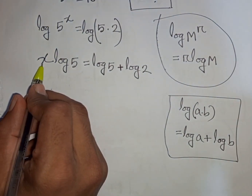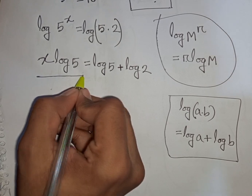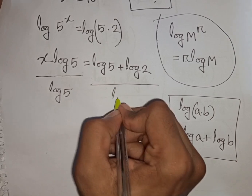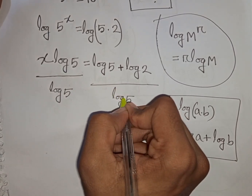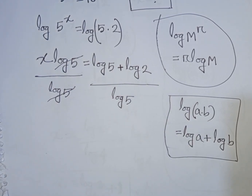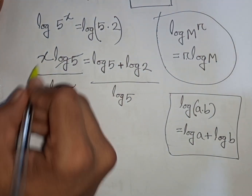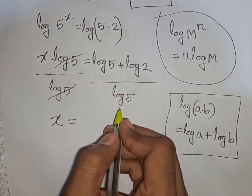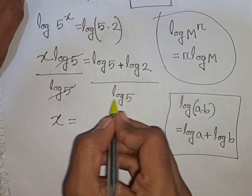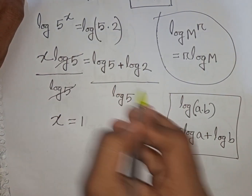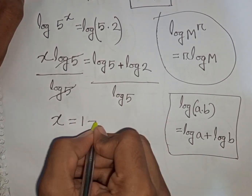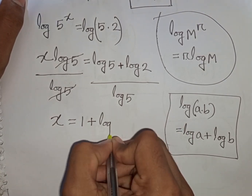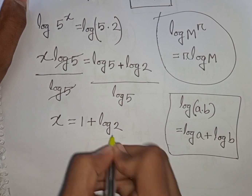Now we need the value of x, so divide both sides by log 5. This log 5 will be cancelled on the left side, so x is equal to log 5 over log 5 plus log 2 over log 5. Log 5 over log 5 equals 1, plus log 2 base 5. So x equals 1 plus log base 5 of 2.